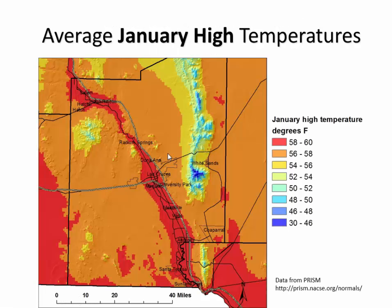What about the highs in January? During the high part of the day, the lower you are, the warmer you'll get — this also follows terrain height. Within the Rio Grande Valley, average highs are in the upper fifties and near sixties; as you go higher in elevation toward the Organ Mountains, you get cooler and even below freezing at the top. This is the average high temperature — similar to precipitation, the most changes occur with elevation.